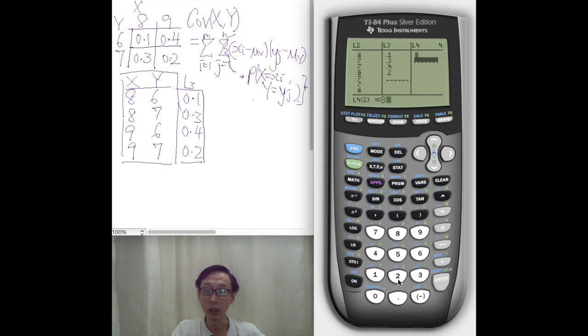which is 8, 8, 9, 9. And in L5, we can enter our Y, which is 6, 7, 6, 7.